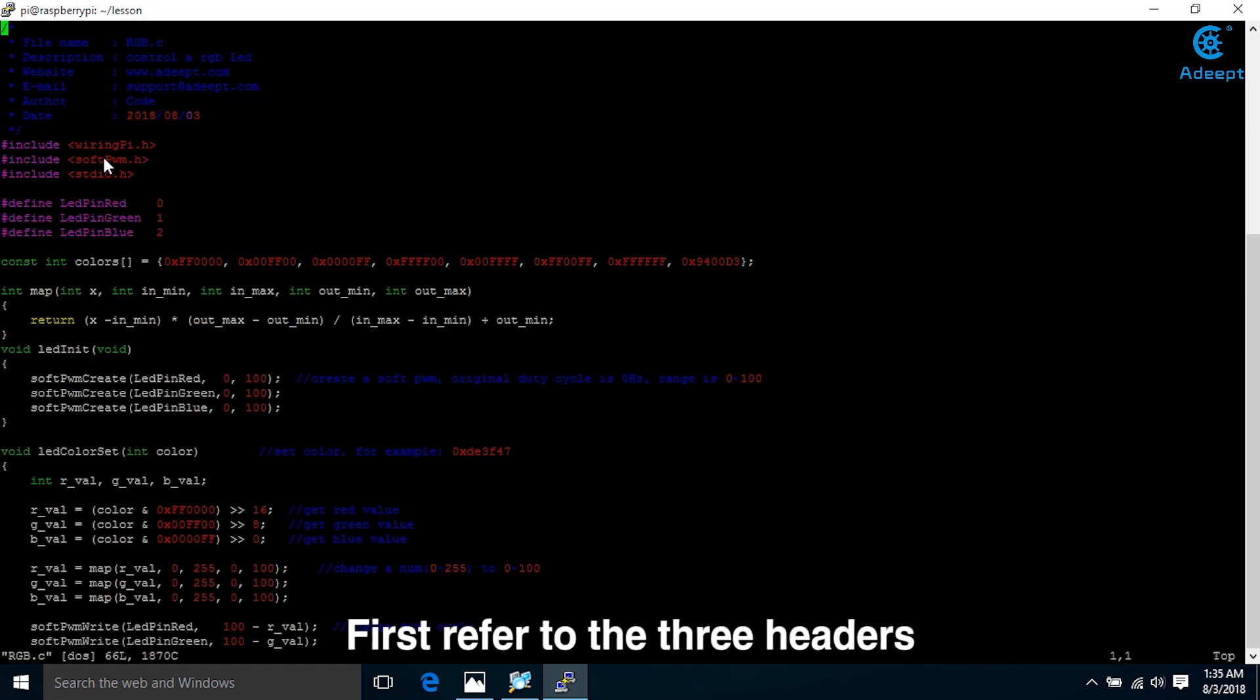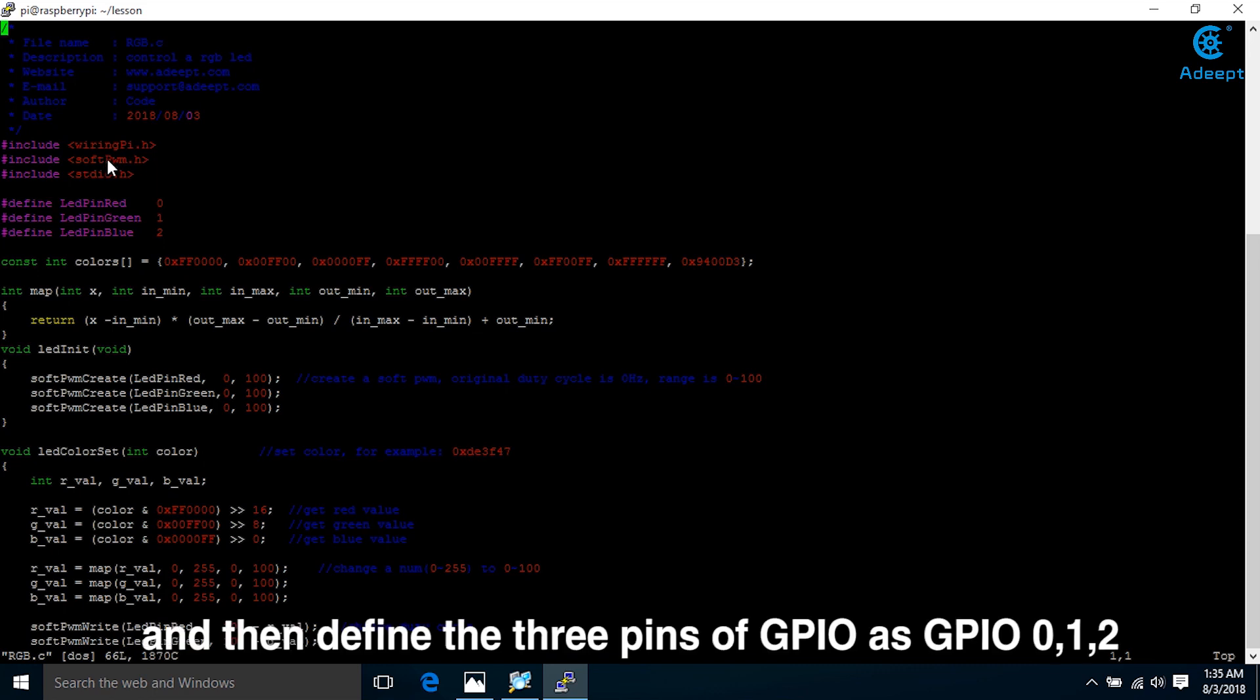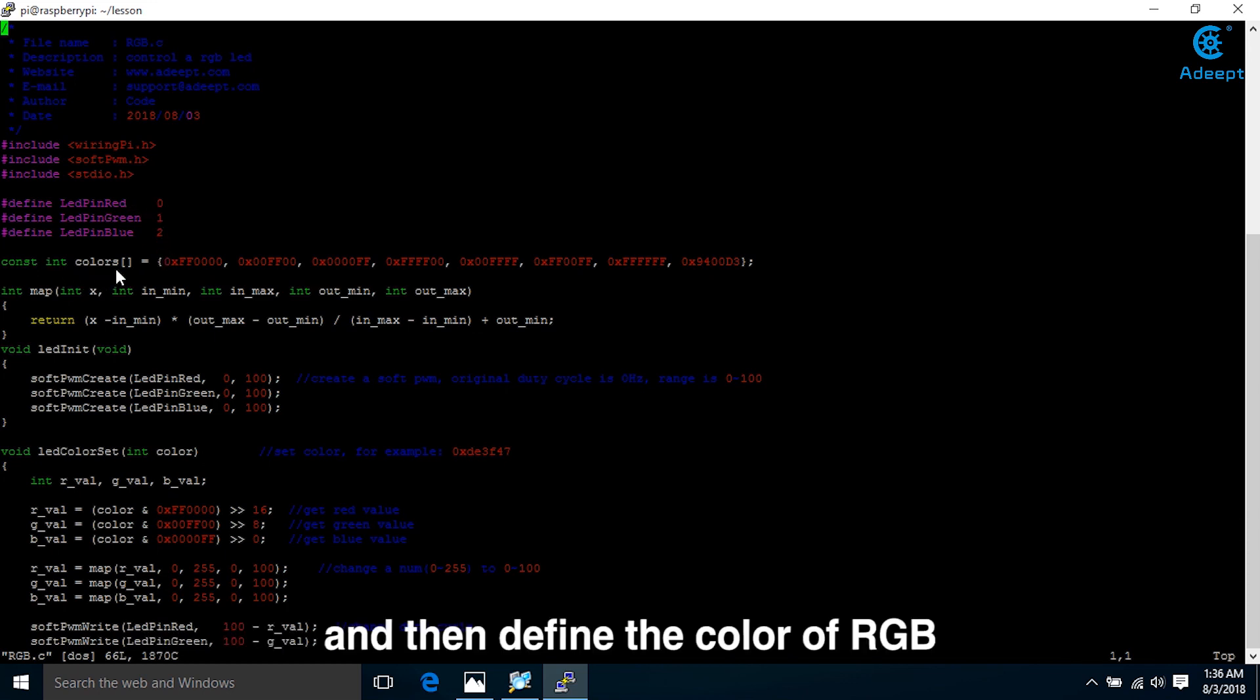First, refer to the 3 headers. And then define the 3 pins of GPIO as GPIO0, 1, 2. And then define the color of RGB. Here I define 8 colors.